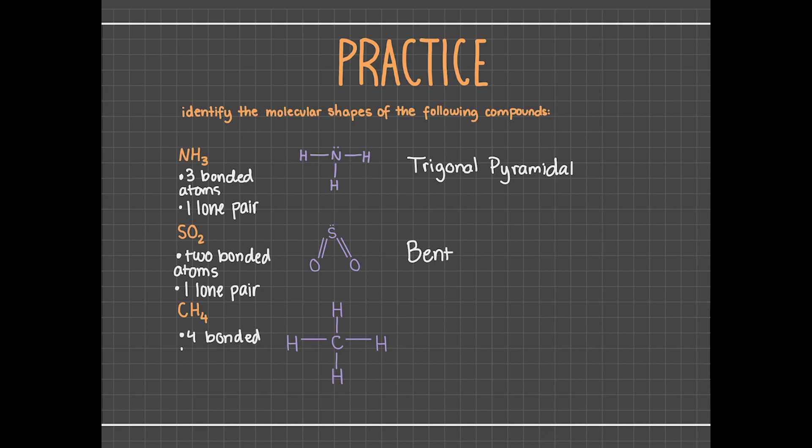And for CH4, or methane, four hydrogens are bonded to a carbon that doesn't have any lone pairs. Therefore, CH4 has a tetrahedral structure, as it has four bonded atoms and no lone pairs on the central atom.